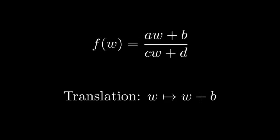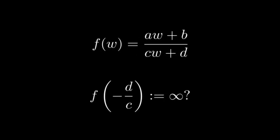Infinities also crop up here. If c is non-zero, then we can find a w so that the denominator is zero. We define this point as mapping to the point at infinity, denoted by an infinity symbol. In fact, it turns out this is the same point at infinity from stereographic projection. Conversely, we can define the image of the point at infinity. If c is zero, this is defined to be infinity. If c is non-zero, then f infinity is defined to be a over c.